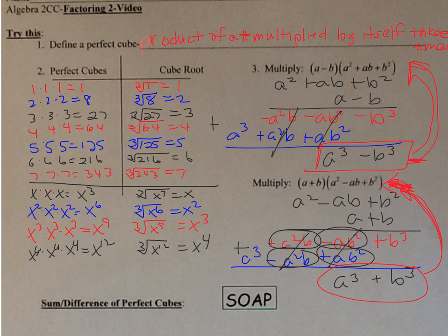Notice the pattern in the signs. For the difference: the first sign in the factored form is the same as the minus, the next sign is opposite, and the last sign is always positive. For the sum: the first sign is the same as plus, the next sign is opposite, and the last sign is always positive. This will always happen.